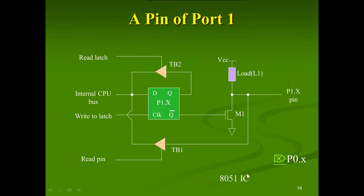The Port 1 pin structure uses a D-latch connected to the internal CPU bus. A clock signal is used for write-to-latch operations. There is a read pin, VCC supply, and the port pin is embedded on the 8051 chip. A transistor with a load L1 is used, implemented as a D-latch.